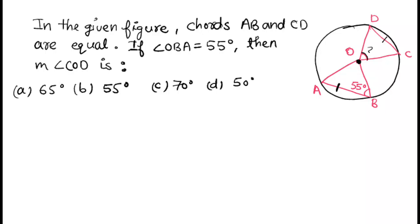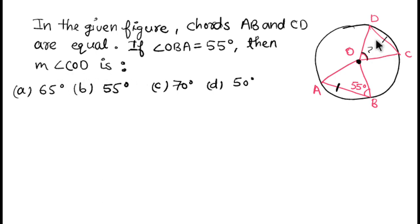Hello friends, welcome to Solution Mitra. We have an interesting question here. In the given figure, chords AB and CD are equal. Angle OBA is given as 55 degrees. We have to find the measurement of angle COD.